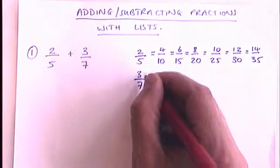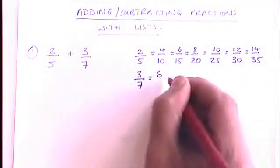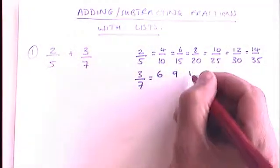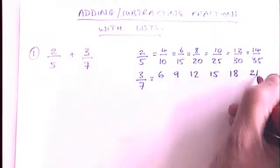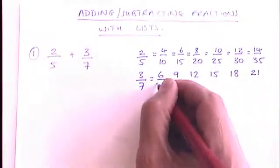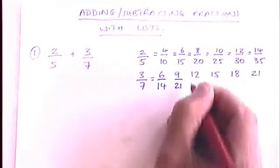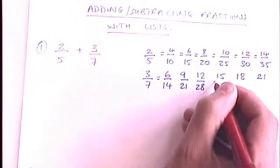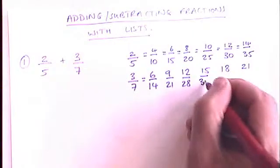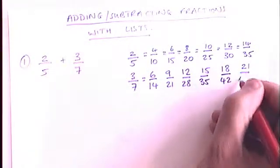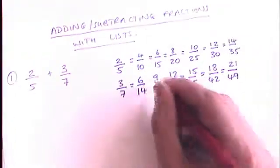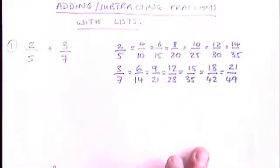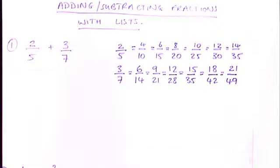And if we have a look at this one here, the top number is going up in threes. So we go six, nine, twelve, adding on three each time, fifteen, eighteen, twenty-one. And the bottom number is going up in sevens, so we go up in sevens. There we go. And all I've done there is write a list of fractions the same as two-fifths and a list of fractions the same as three-sevenths.